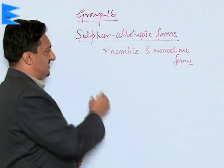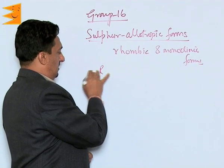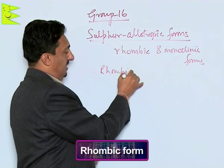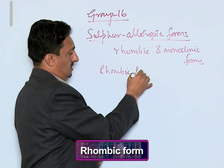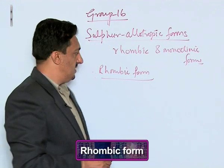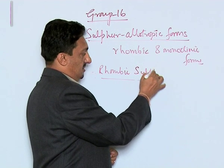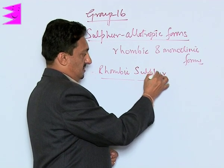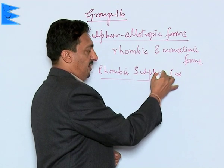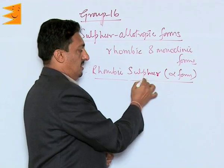Let us first discuss the rhombic allotropic form of Sulphur, called rhombic Sulphur. Rhombic Sulphur is also called the alpha form.